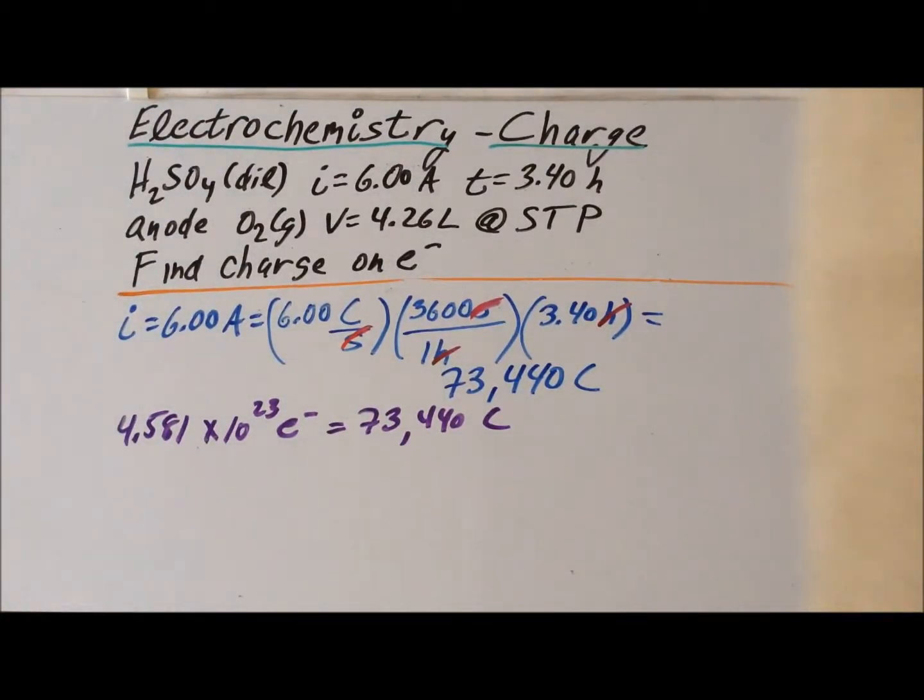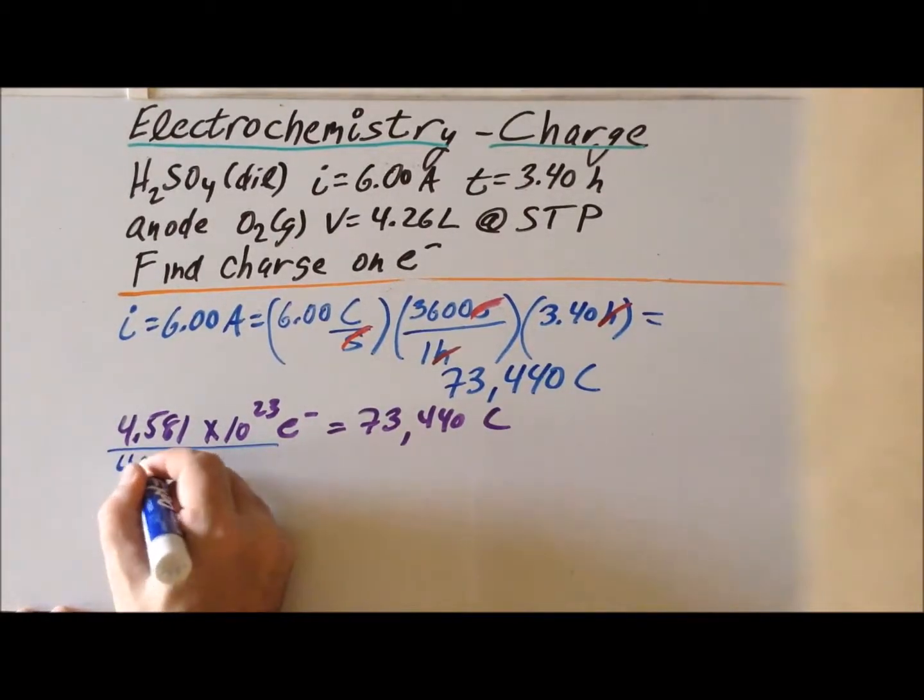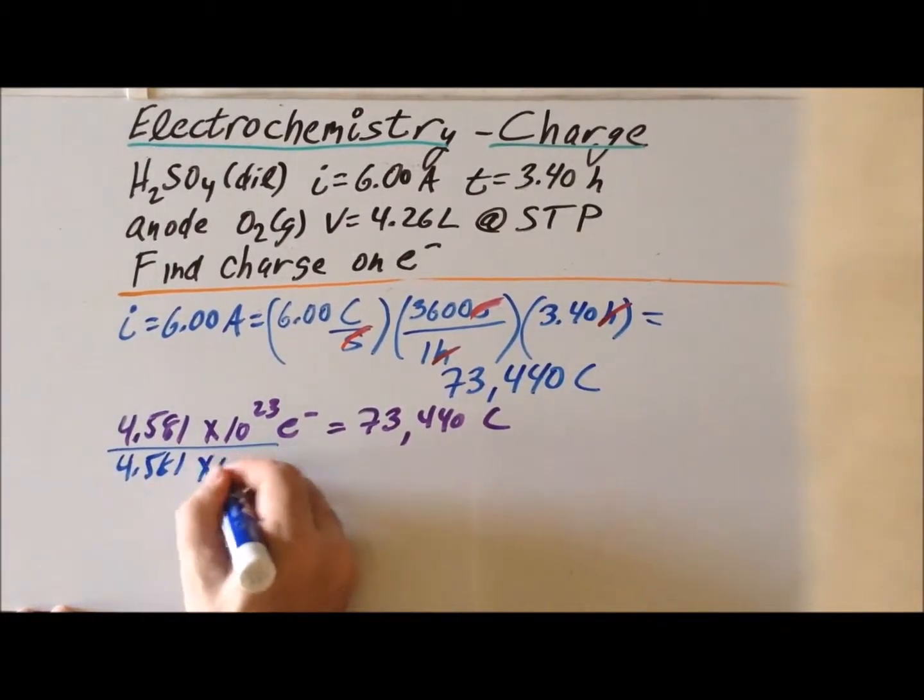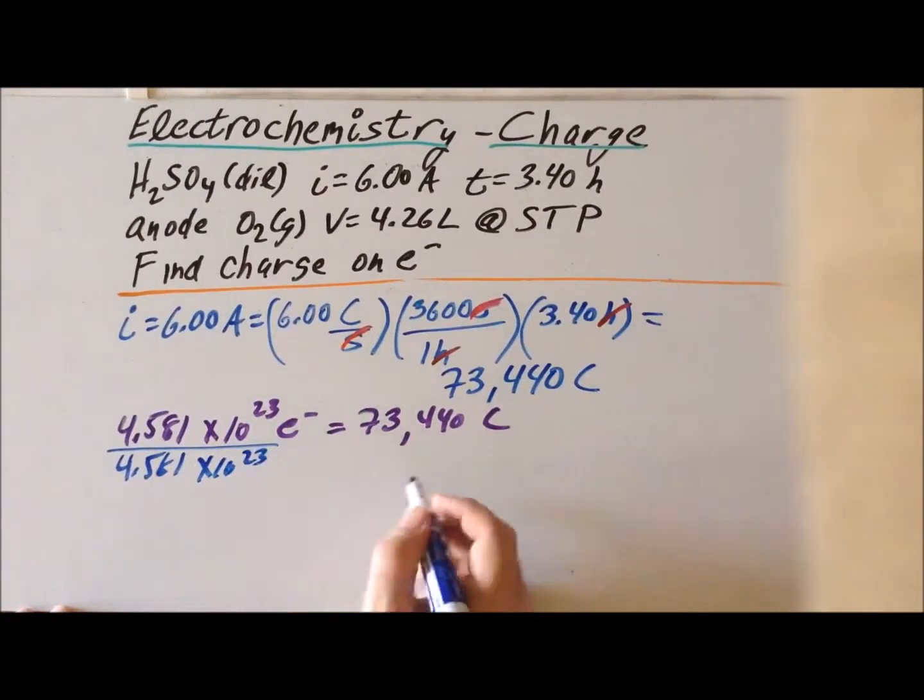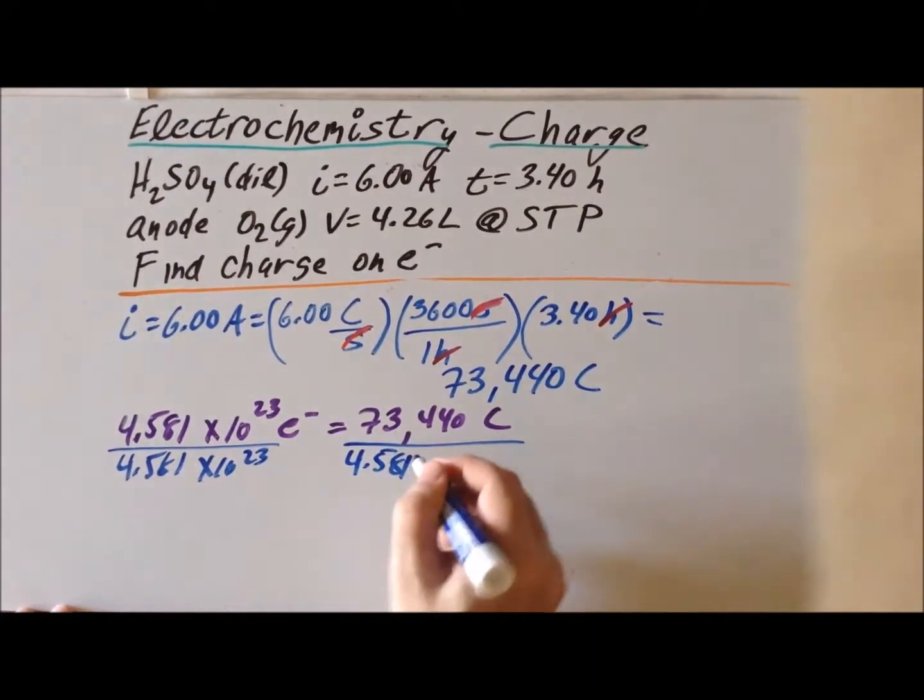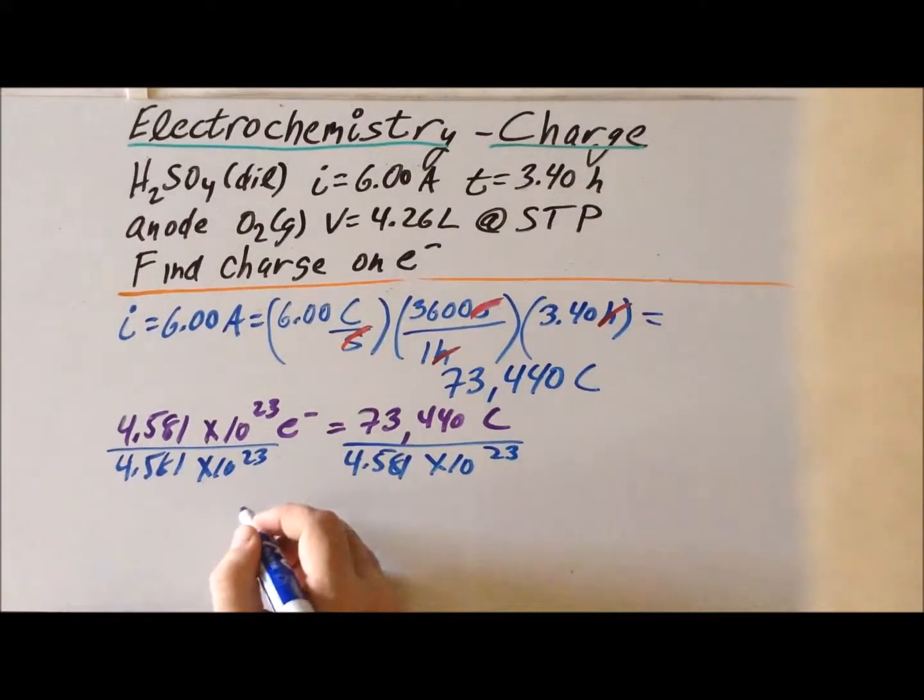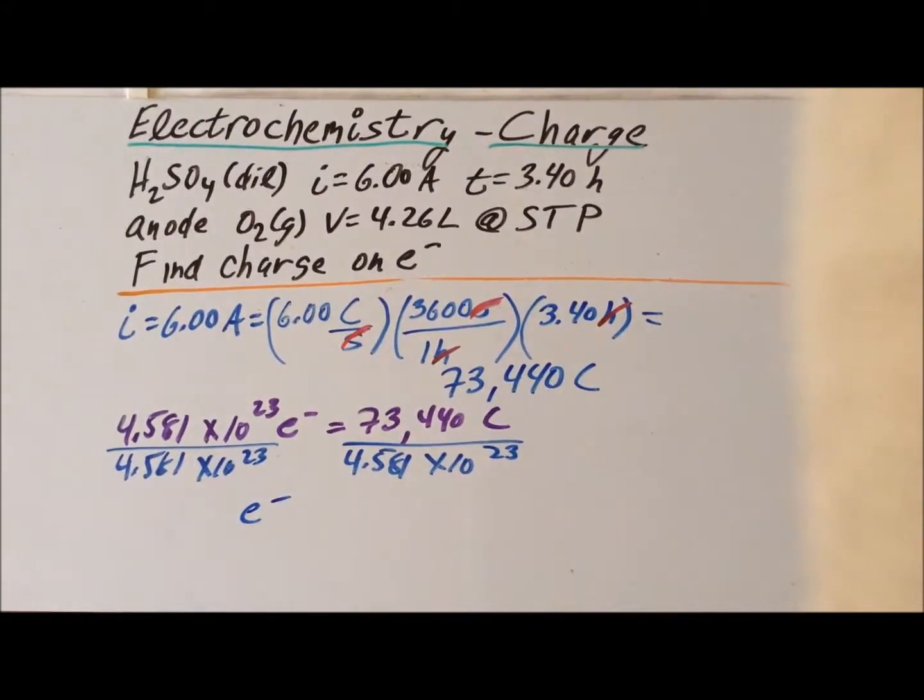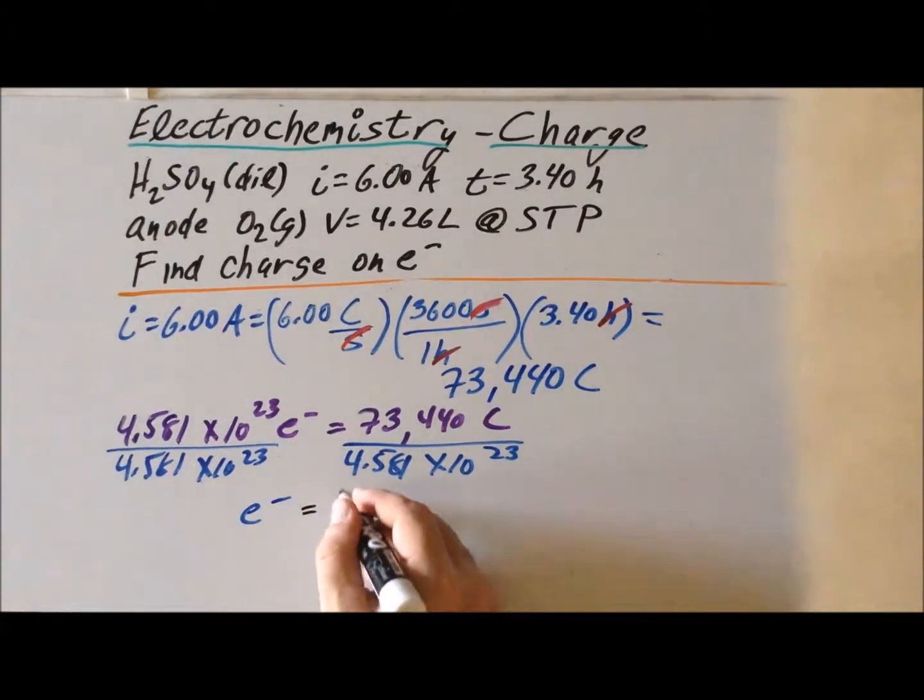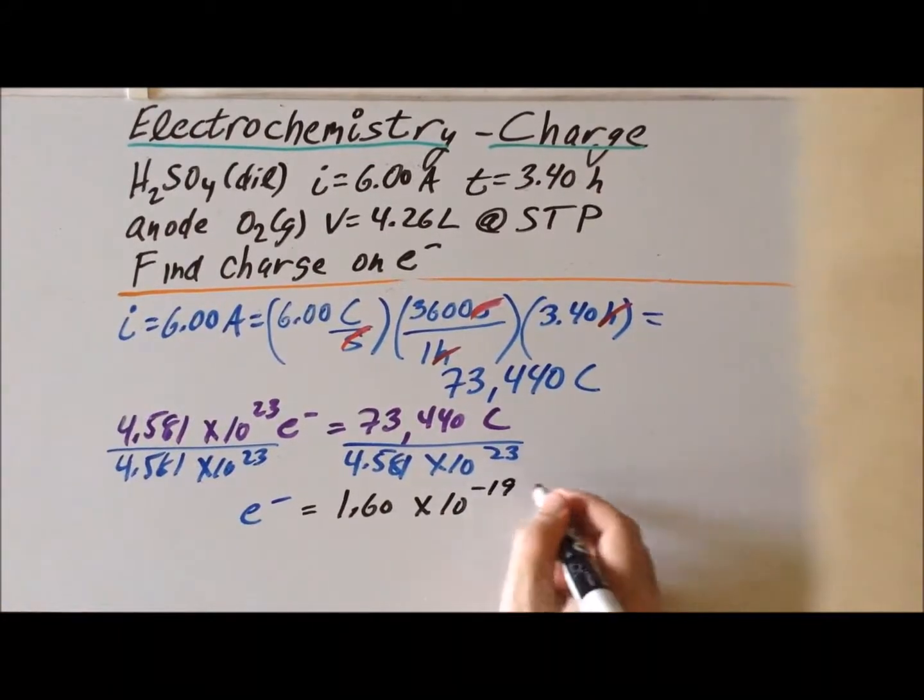So therefore, if we simply divide each side by the number of electrons, 4.581 times 10 to the 23rd, what it gives us is the total charge on exactly one electron. And we find that to be 1.60 times 10 to the minus 19 coulombs.